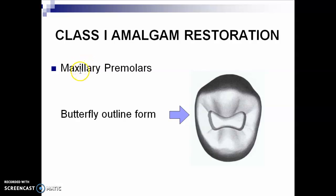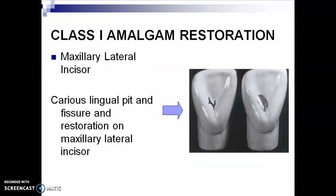For maxillary premolars, you have a butterfly outline form — this is your butterfly or your dumbbell shape. You may watch our previous videos on how to make a Class 1 preparation. In maxillary lateral incisor, very common is the lingual pit caries, and you just have to do an oval preparation. If in case the caries extends to the other side, then you can make a triangular preparation.